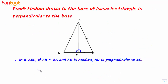Let's summarize what we have learned. In triangle ABC, if AB equals AC and AD is the median, then AD is perpendicular to BC.